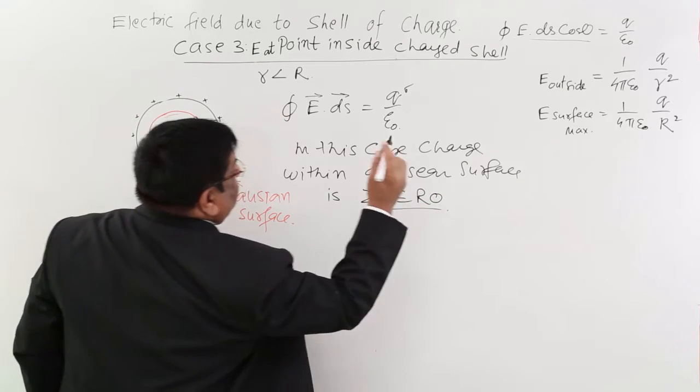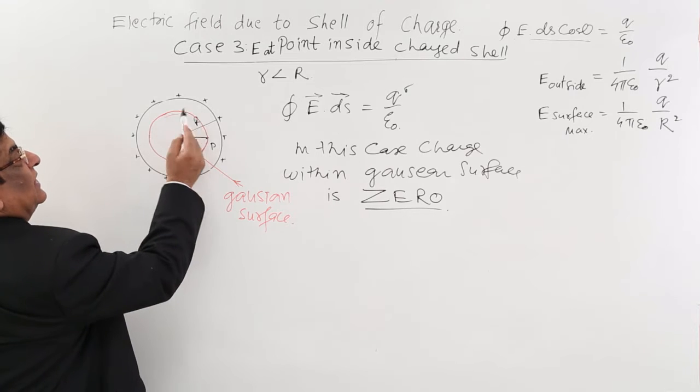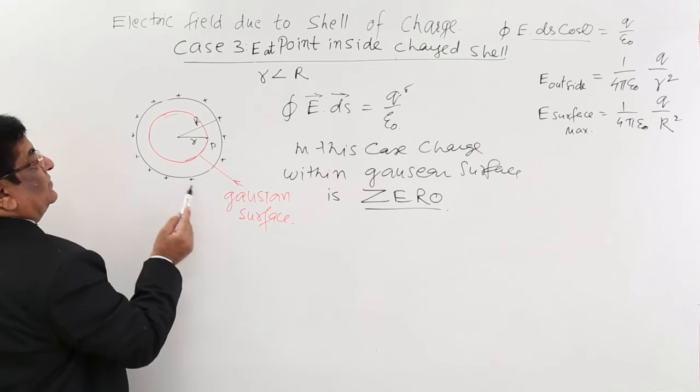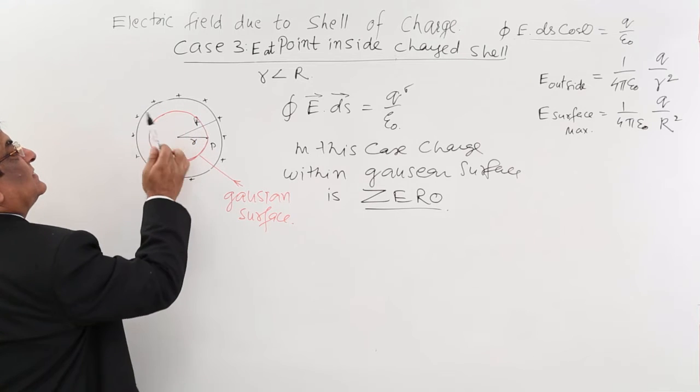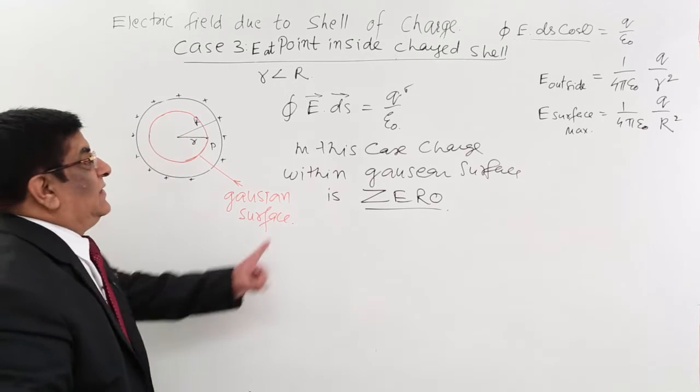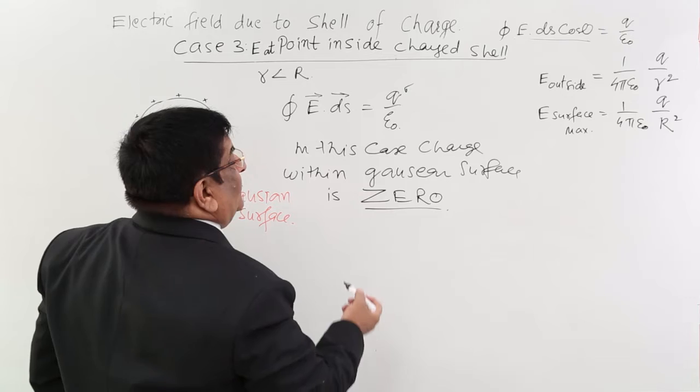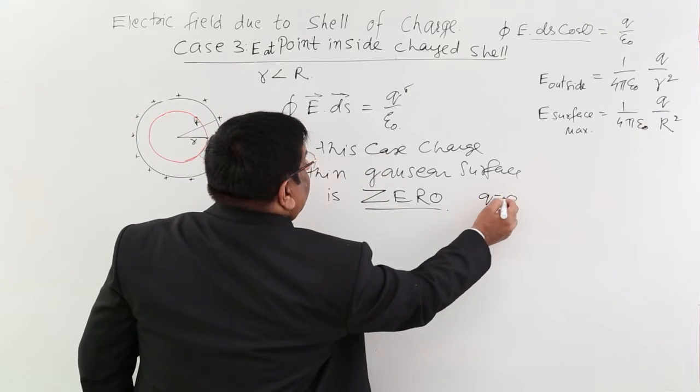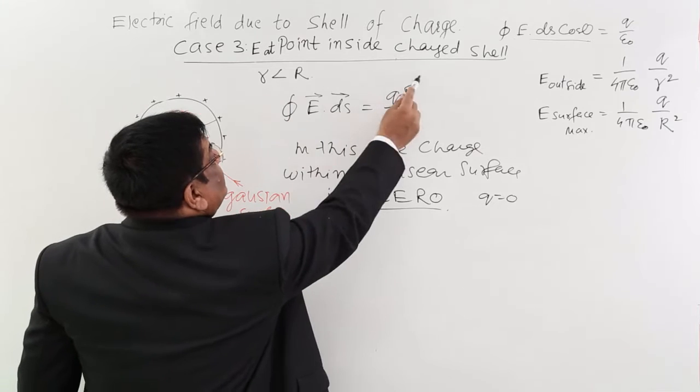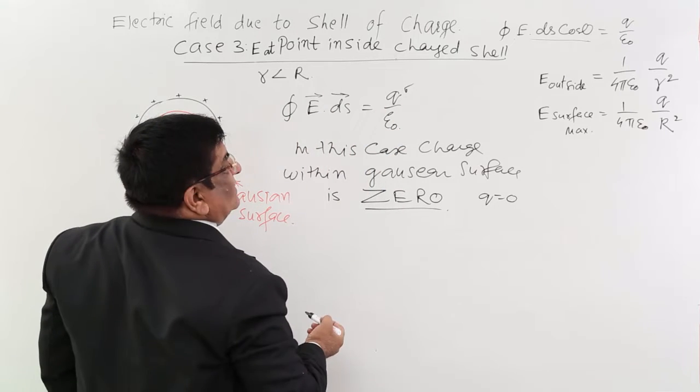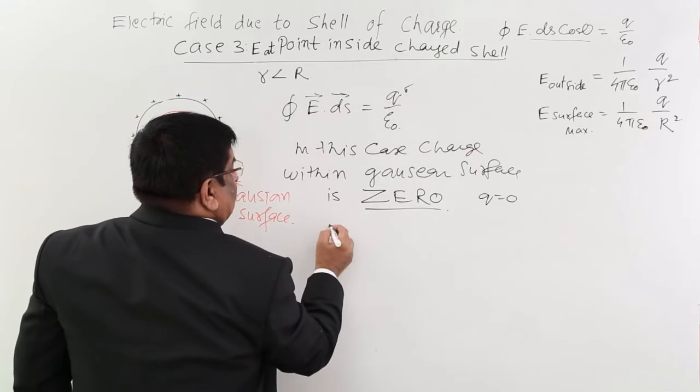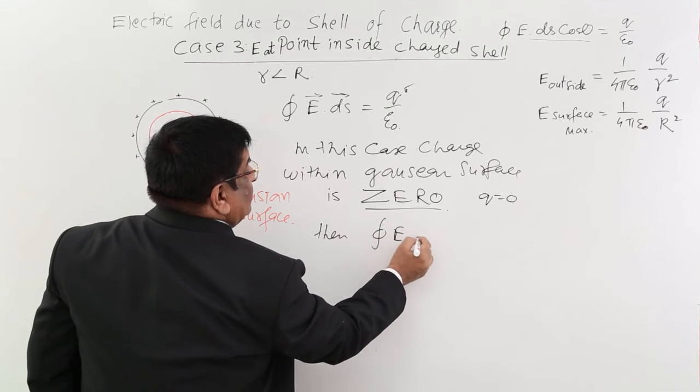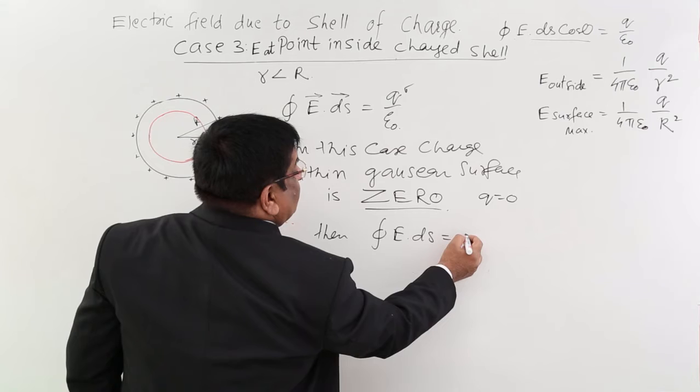Yes, see this charge is outside, this charge is outside, this charge is outside. So inside, how much is the charge? There is no charge, so it is zero. If this has become zero, that is q equals zero in this equation. If this q equals zero, then E·ds equals zero.